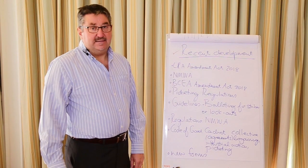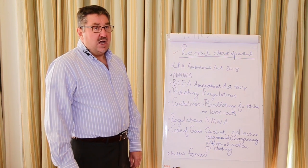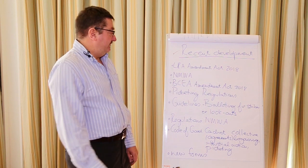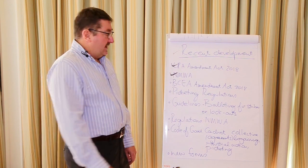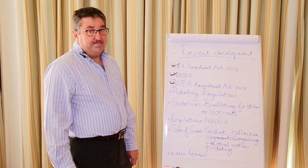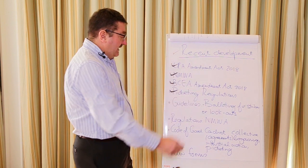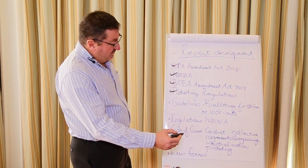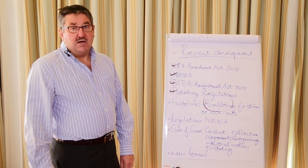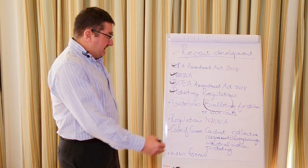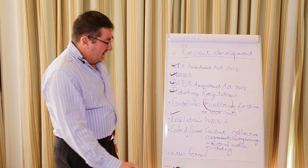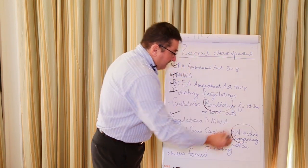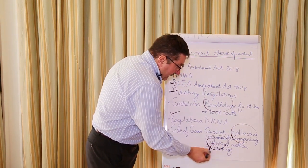On the 1st of January 2019 and subsequently to that date, a whole bunch of statutory enactments came into operation. There's the Labor Relations Act, the National Minimum Wage Act, the Basic Conditions of Employment Amendment Act, then picketing regulations, guidelines specifically relating to balloting, regulations specifically regulating the National Minimum Wage Act, and then a very important code of good practice that deals with collective bargaining, industrial action and picketing.